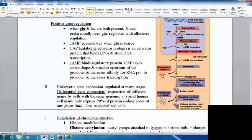Eukaryotic gene expression is regulated at many different stages. Differential gene expression is the expression of different genes by cells with the same genome. In humans, you may only express about 20% of protein-coding genes at any given time. We have many different specialized cells with genes they don't need to use.